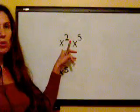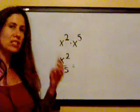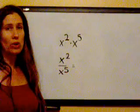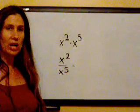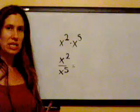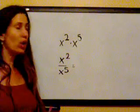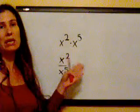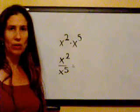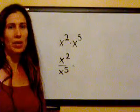So the first problem here is x to the second times x to the fifth. There are some laws of exponents that you'll learn when you get to algebra, but I think it's a really good idea to learn what it means. If you know what this means, you'll naturally discover the laws of exponents, and you'll remember because you understand them.